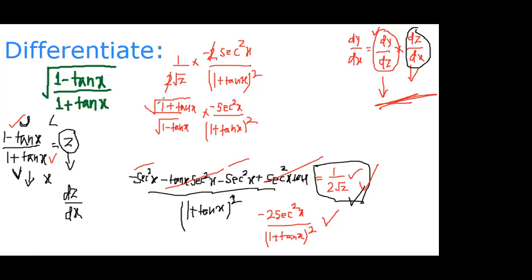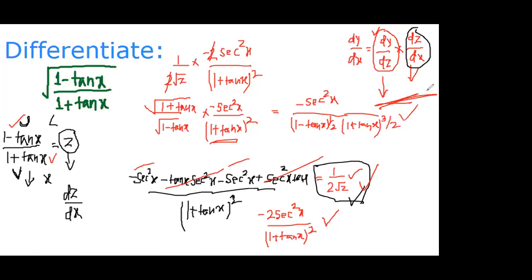The final answer is: dy/dx = -sec²x / [(1 - tan x)^(1/2) · (1 + tan x)^(3/2)]. Thank you so much, please subscribe to my channel. On every type of example I will be solving more than 15 to 30 questions, so please subscribe.